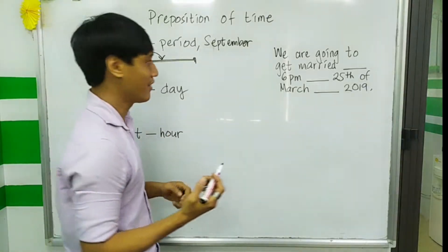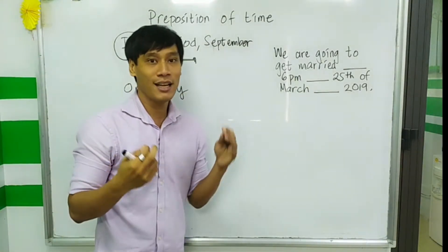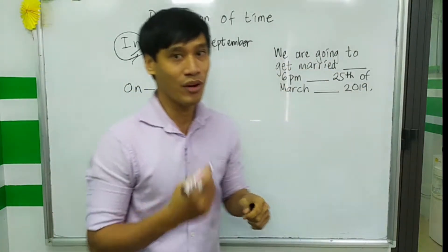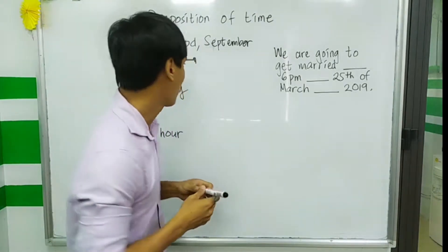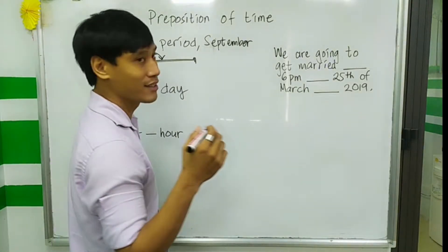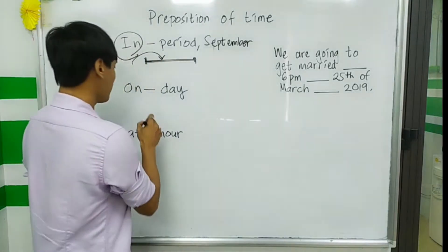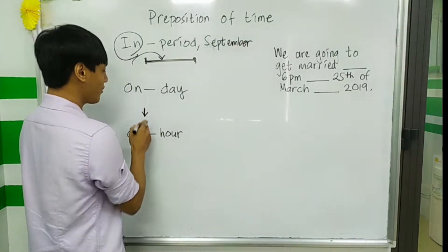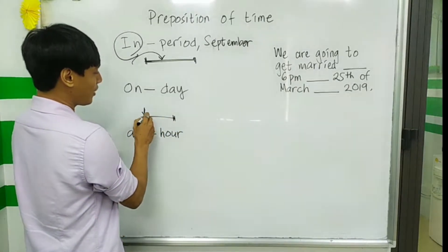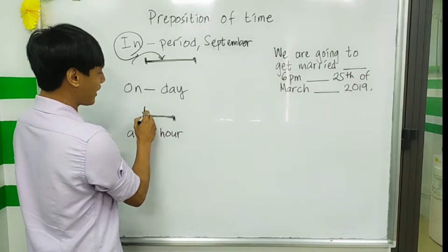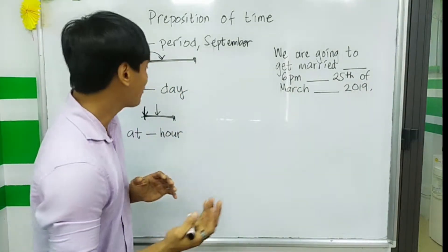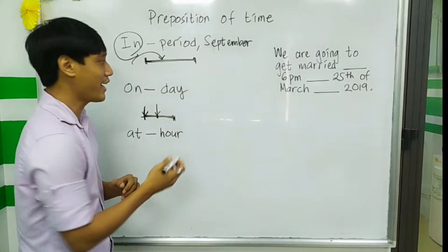We also use 'in' for 'in the morning' and 'in the afternoon' — those are special cases. Next is 'on'. We use 'on' for a specific day. For example, this is the whole September, but 'on that day' — on the 25th of September, or on the 5th of September — so just one specific day.